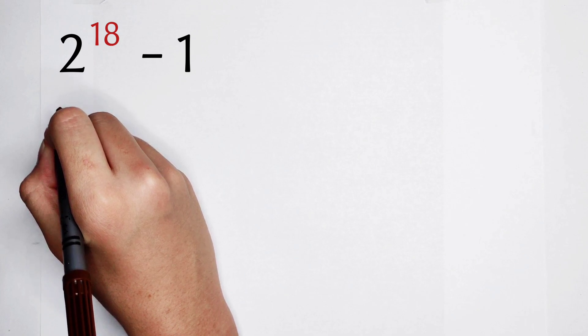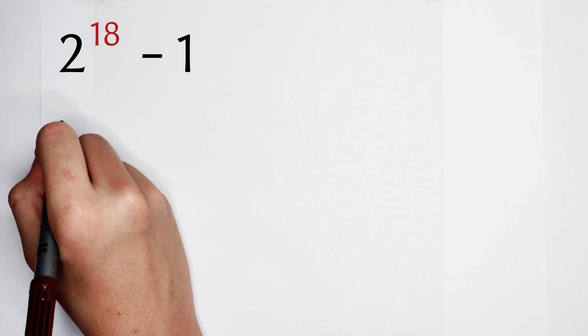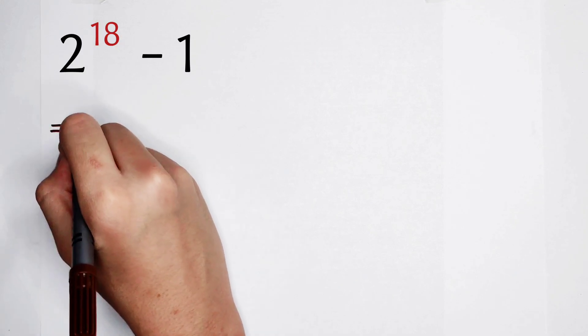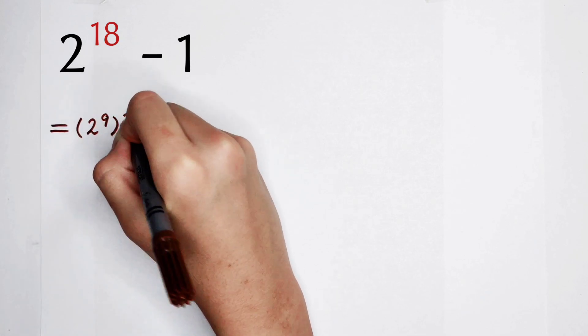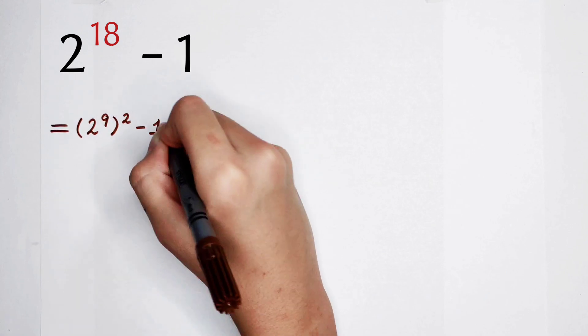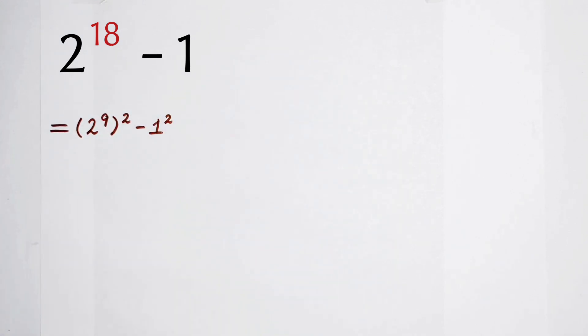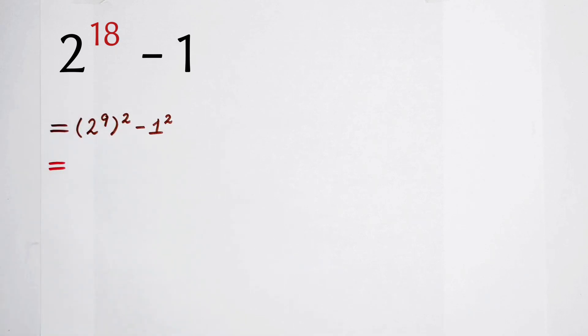18 can be written as 2 times 9. And 2 to the power 18 can be written as 2 to the power 9, and then squared. Minus 1 is minus 1 squared. And if you can write this, then the next step is to use the third binomial formula.